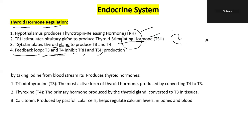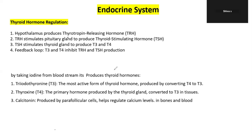The thyroid gland produces T3 and T4. If iodine is available in the bloodstream, the thyroid gland uses it for hormone production. T4 is the primary hormone secreted directly by follicle cells, and it is then converted to the more active T3.